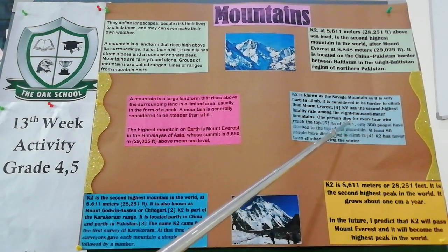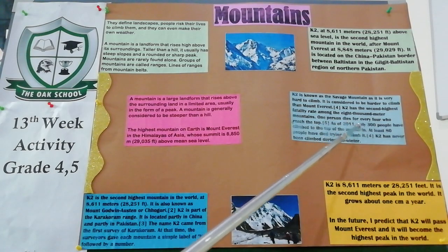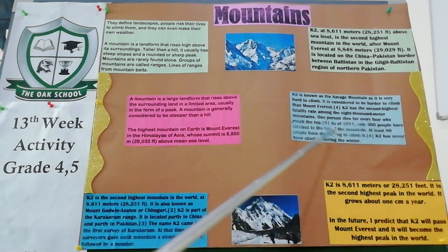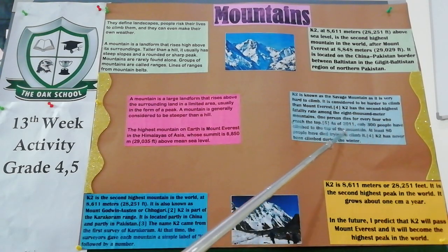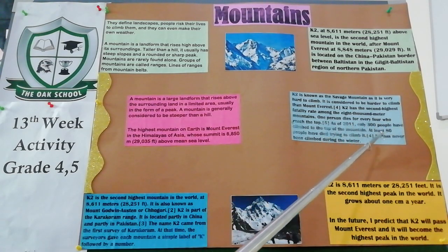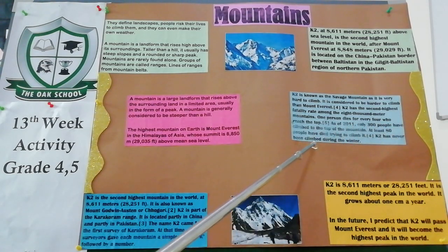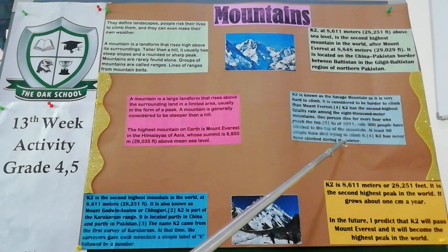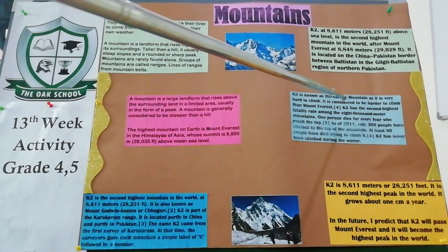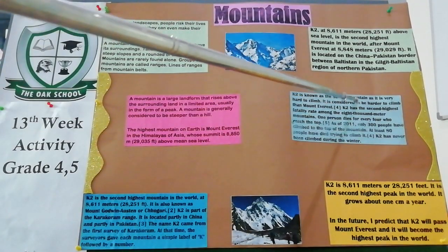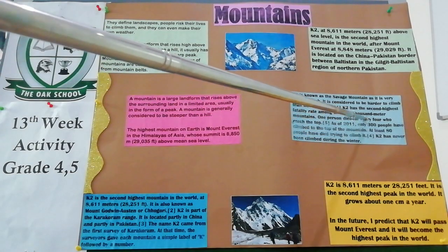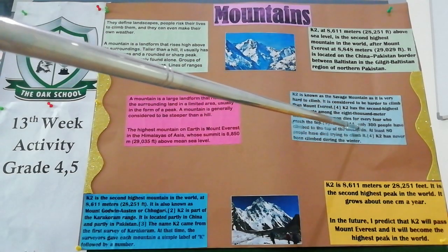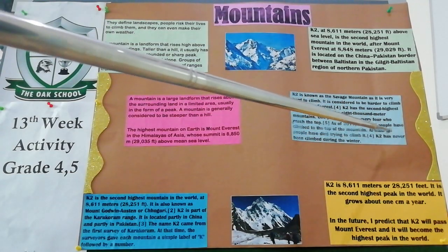One person has died for every four who reached the top. As of 2011, only 300 people have made it to the top of the mountain, and at least 80 people have died trying to climb it. K2 has never been climbed during the winter. K2 is a very dangerous mountain — many people attempt to climb it, but as of 2011, only 300 people have succeeded.